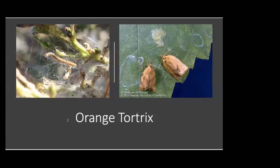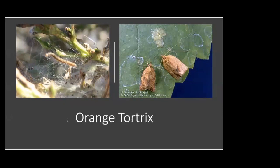Orange tortrix feeds on leaves and grape clusters and produces webbing where it feeds. In the photo on the left you can see this webbing. It uses webbing at the shoot tips to fold leaves, creating pockets to hide and feed inside of, protecting them from predators. Other insects can cause similar damage but not all produce this webbing. In early spring it causes damage to grape buds and emerging shoots. The larvae feed on grape clusters, opening the fruit to fungi and bacteria that can cause rot. The male and female are shown side by side, with a laid egg mass above — semi-flat and overlapping.